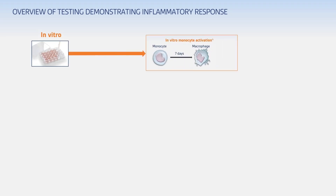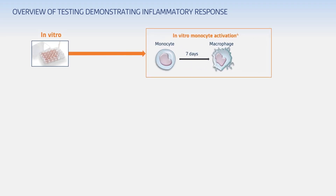Here are some of the ways we test ADMs on the benchtop and in animal models. In vitro, we culture a population of white blood cells called monocytes and then introduce an ADM. Then we run an immunoassay, looking for inflammatory biomarkers such as the cytokines listed here.